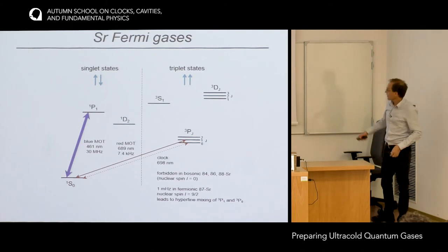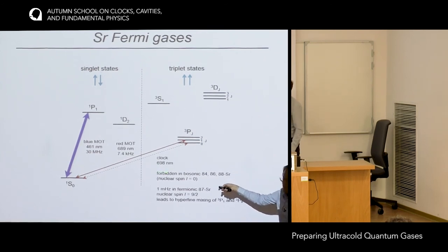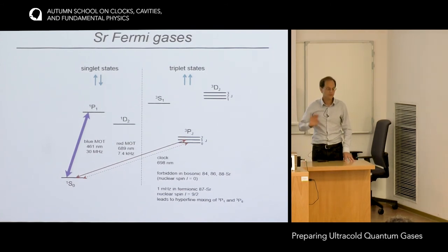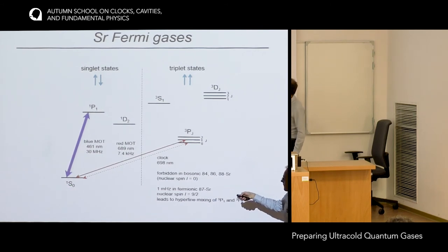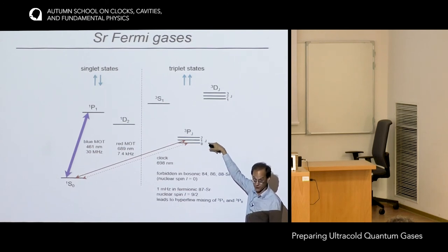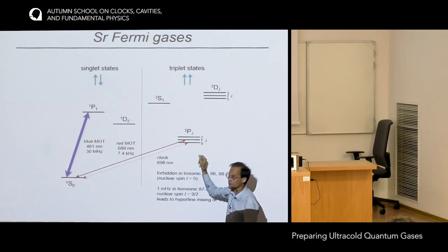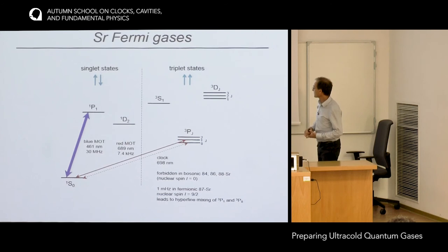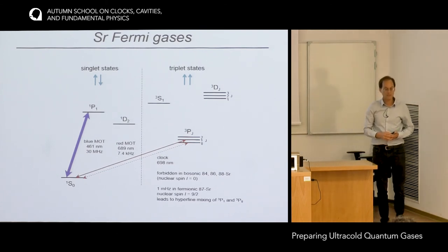Now we want to build a clock. In strontium we have a beautiful clock transition between 1S0 and 3P0 — two non-magnetic states, which is important for clock transitions. In bosonic strontium this transition is forbidden without applying external fields. In fermionic strontium-87, the nuclear spin gives rise to hyperfine structure that mixes the 3P1 and 3P0 states slightly, allowing an electric dipole transition from 1S0 to 3P0 with a 1 millihertz linewidth — very nice for clock construction.